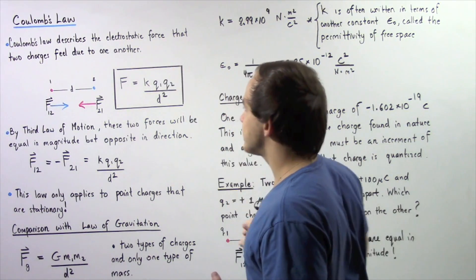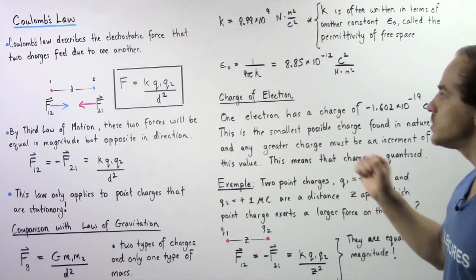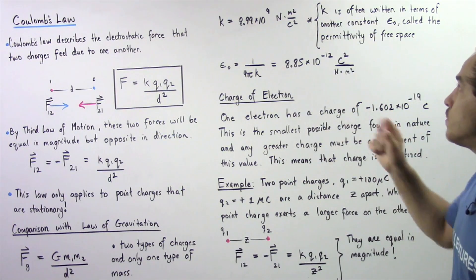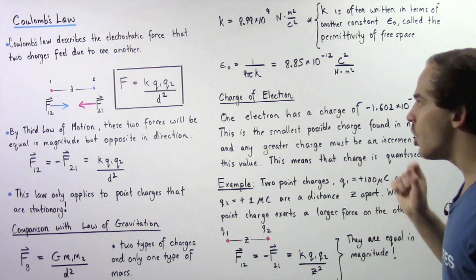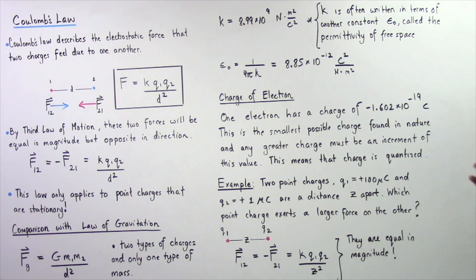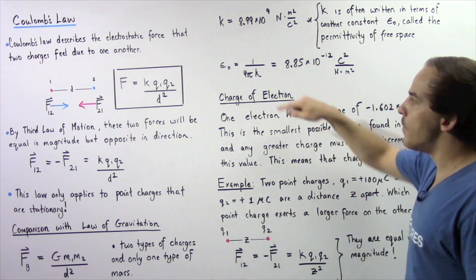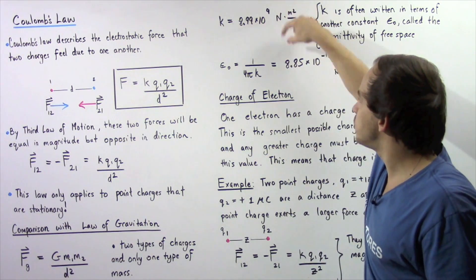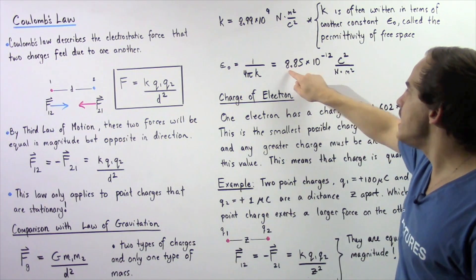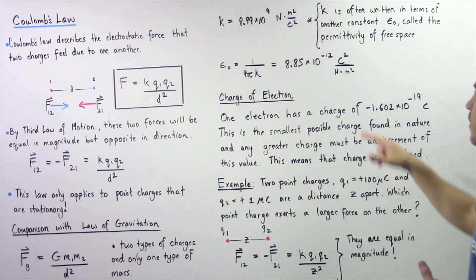The constant k is equal to 8.99 × 10⁹ N·m²/C², where Coulomb is the unit for electric charge. The constant k is often written in terms of another constant known as the permittivity of free space, given by the symbol ε₀, with a value of 1 divided by 4π times k — which works out to 8.85 × 10⁻¹² C²/(N·m²).